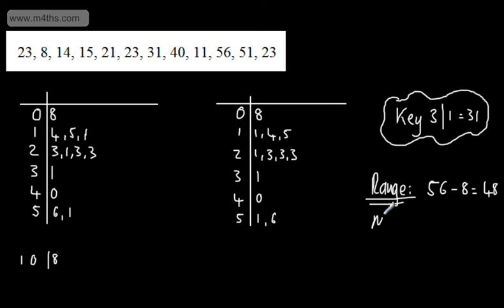If we think about the mode, the mode is the most frequently occurring value. If we look in this column, we've got the 2 and we've got 3 of these 3s. A common misconception is to write down that the mode is 3. The mode is 23. So we can say that the mode is 23.